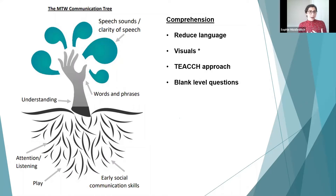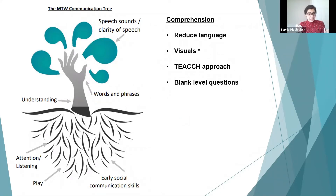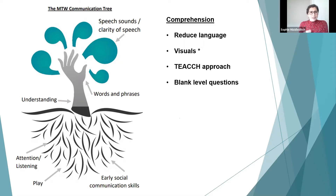Blank Level 3 involves thinking about how things are the same or different, identifying things, telling a story, or putting pictures in order. A useful 'find one' task is 'What do I need to brush my teeth?' — having out objects like a toothbrush, toothpaste, a flannel, plus distractors like a fork, and asking them to match what's needed, without requiring verbal language. Blank Level 4 is predicting — 'What's going to happen next?' — using sequencing pictures or giving two options to choose from.